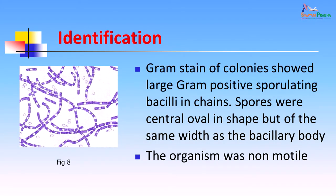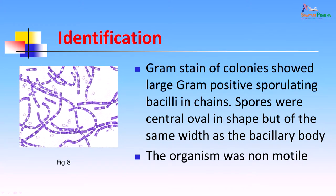After smears were made from the culture, the picture was very different from the original smear. Here, a lot of spore-containing bacilli were seen. The Gram stain of the colony showed large Gram-positive sporulating bacteria in chains. Spores were central and oval in shape, but of the same width as the bacillary body — unlike Clostridia, where spores are larger and give a spindle shape. These bacillus spores are characteristically only seen in culture medium; they are never seen in tissues. In tissues, the capsulated appearance is seen, while in culture medium, spores are visible.